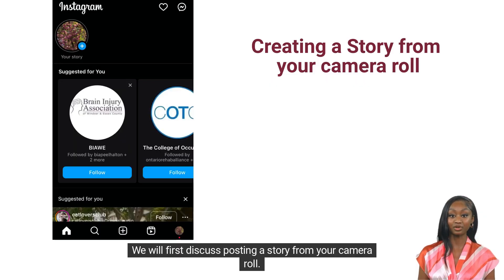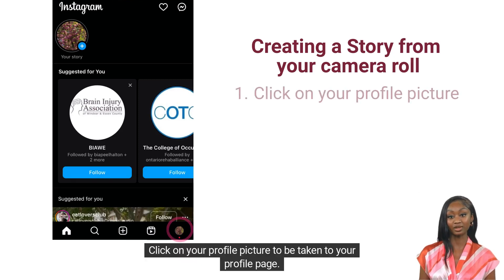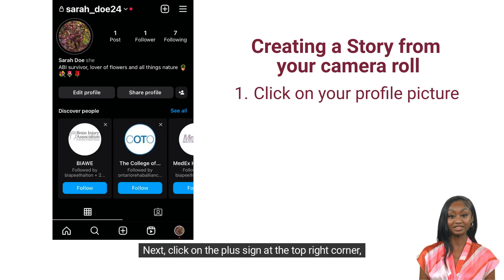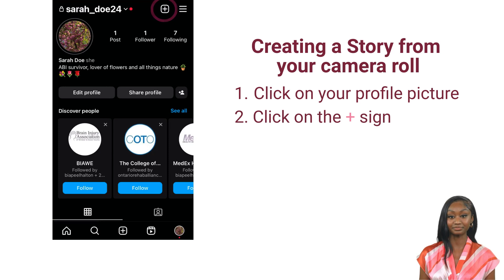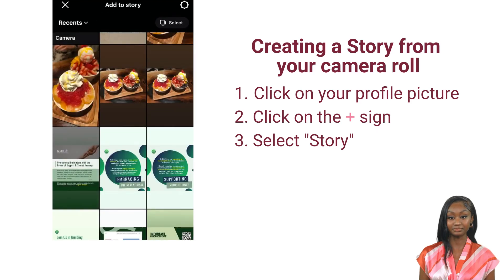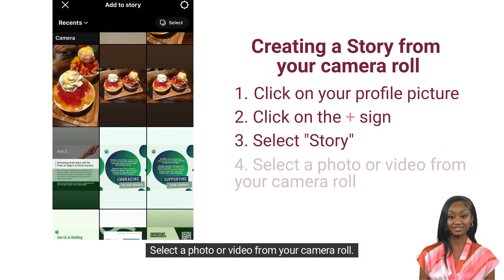We will first discuss posting a story from your camera roll. Click on your profile picture to be taken to your profile page. Next, click on the plus sign at the top right corner, then select story.